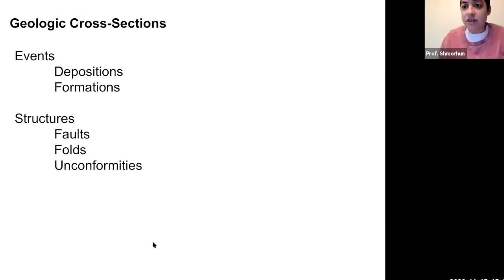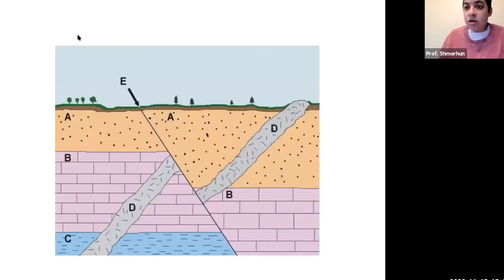Let's take a look at an example of a geologic cross-section. Here we have a pretty good example, and you'll see these different beds - essentially these planar continuous beds moving across the screen.